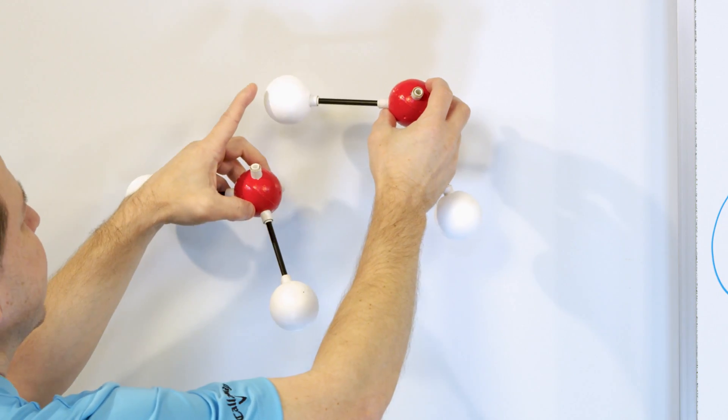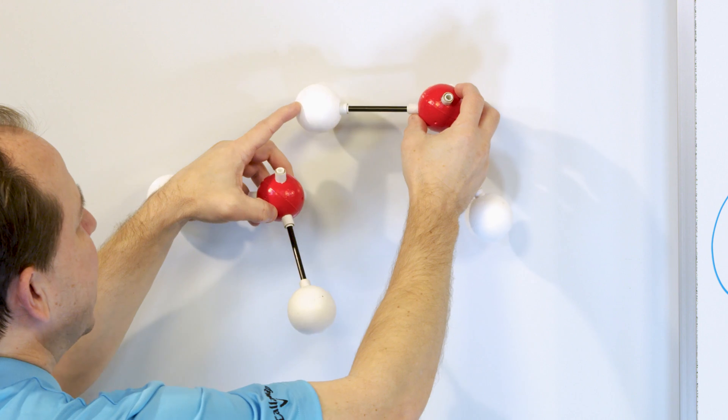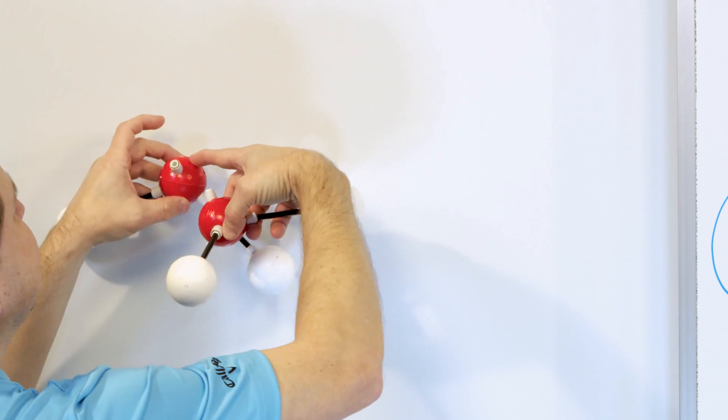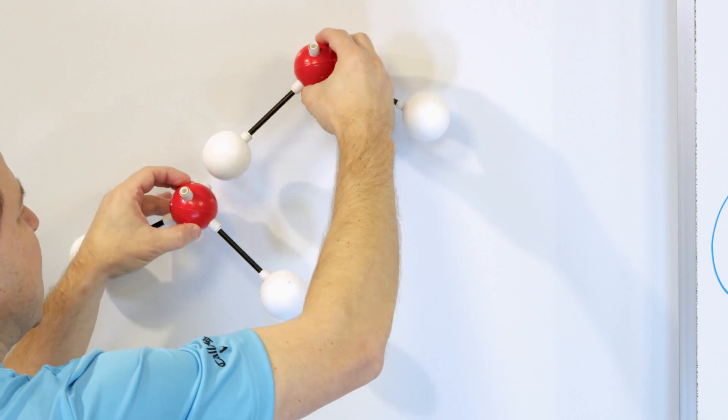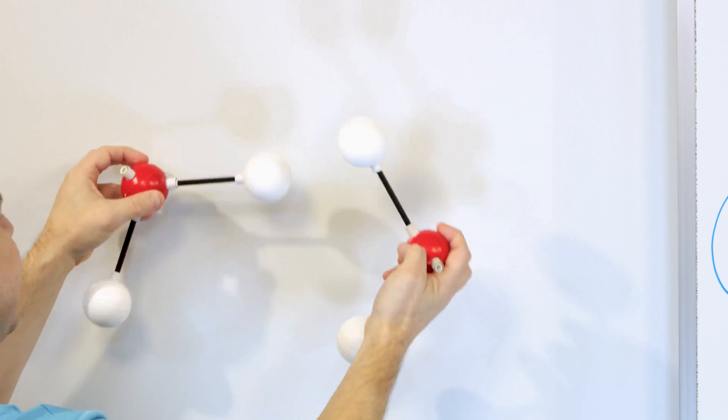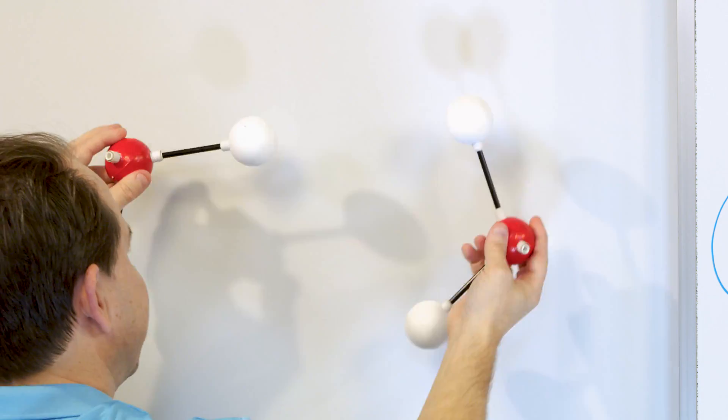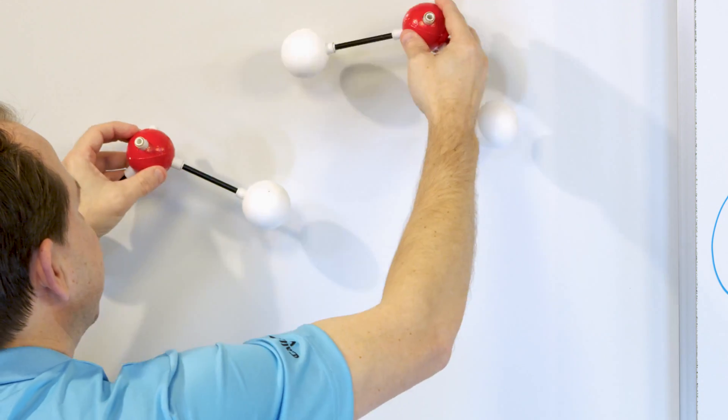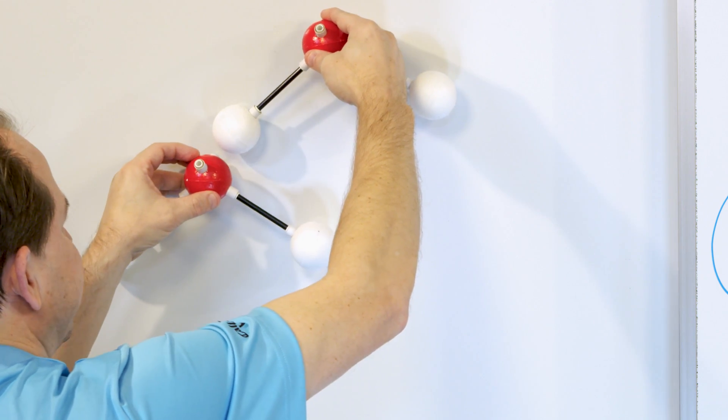So when the water freezes, what happens is the positive charge on this hydrogen gets attracted to the negative charge here and then it locks in position. In the liquid state, of course, it can flow past and bounce off with a lot of energy, but when we cool it down, it's not moving so fast and so it can lock into place like this.